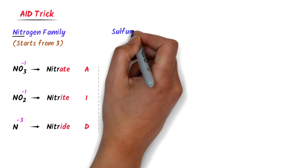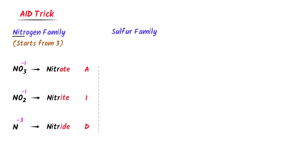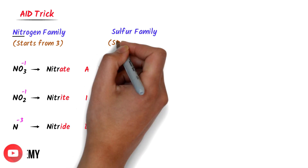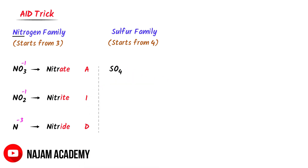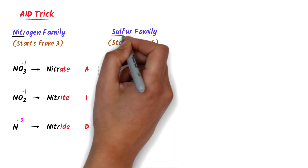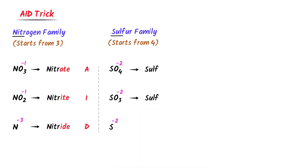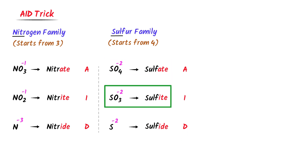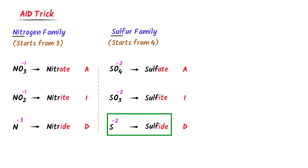Now the polyatomic ions of the sulfur family. The polyatomic ions of sulfur with oxygen start from 4 like SO4, SO3, and S. The charge on each ion is negative 2. I take 'sulf' and write it in front of each ion, then use the AID trick. A stands for ATE, I stands for ITE, D stands for IDE. So I get sulfate, sulfite, and sulfide. These are the polyatomic ions of the sulfur family.